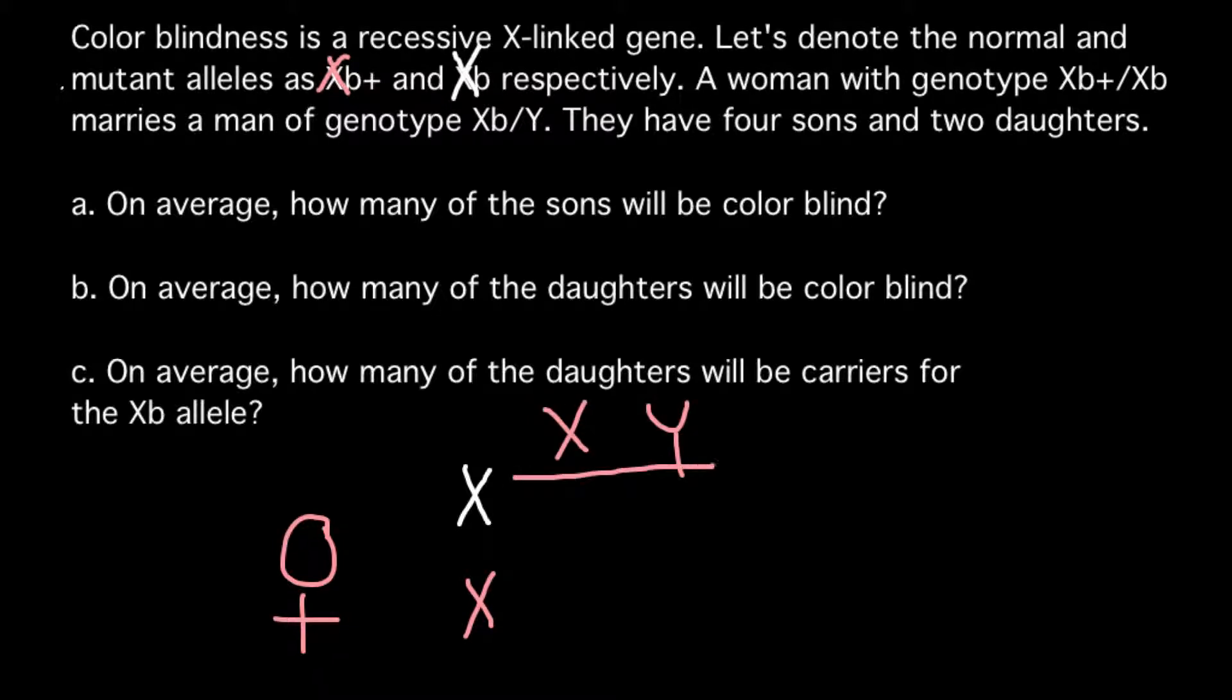So if we build a Punnett square we can find the outcome of such a cross. So here we would have one defective X chromosome. Actually this is not the whole chromosome that is defective, only one gene.